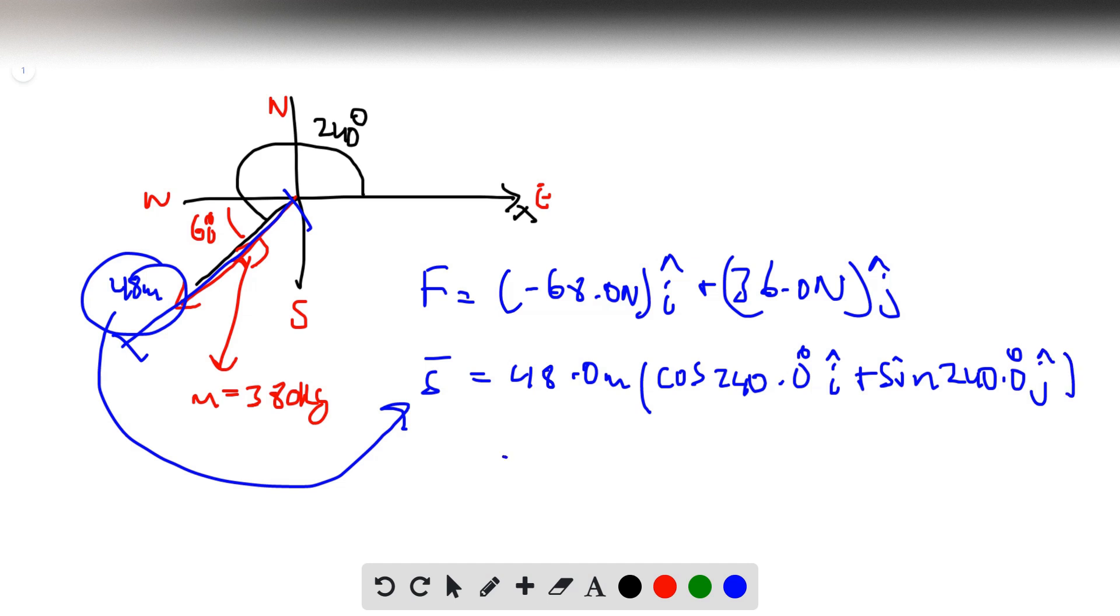That gives us a displacement of negative 28.5 meters I hat, or rather minus, minus 49.36 meters J hat.